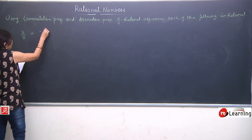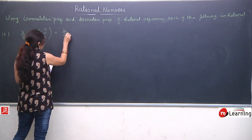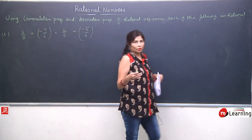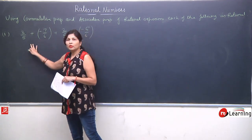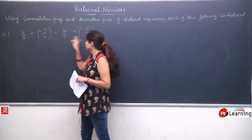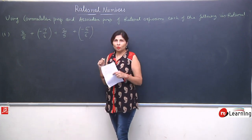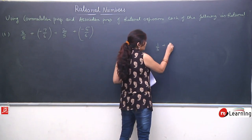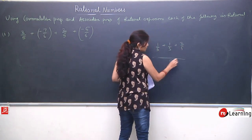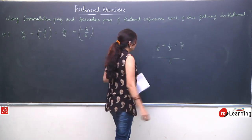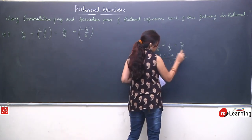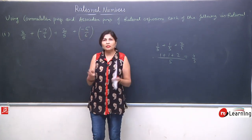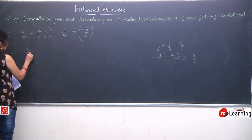The first expression is 3/5 + (−7/6) + 2/5 + (−5/6). First we will observe the question carefully and notice there are two kinds of denominators — some terms have 5 as denominator and some have 6. Hame click hona chahiye ki same denominator wale terms ko saath collect karo, toh LCM easy ho jata hai. If we have the same denominator, we take that as the LCM and simply copy the numerators as-is, making the solution much easier.